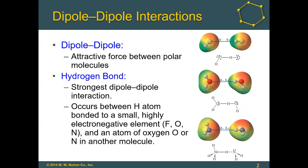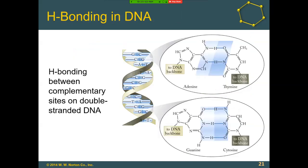So remember: dipole-dipole forces are attractive forces between polar molecules. Hydrogen bonds are the strongest type of dipole-dipole interaction. For them to occur, you specifically have to have a hydrogen attached to a fluorine, oxygen, or nitrogen, and that hydrogen then interacts with another fluorine, oxygen, or nitrogen from another molecule. Here are those DNA bases again — this order of hydrogen bond donors and acceptors is what allows things to recognize these bases within biological systems.